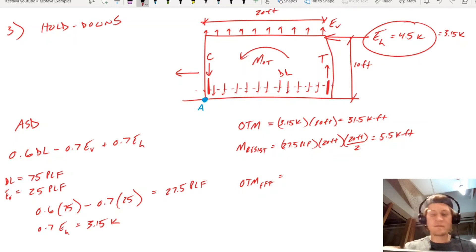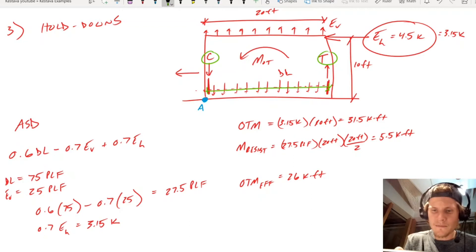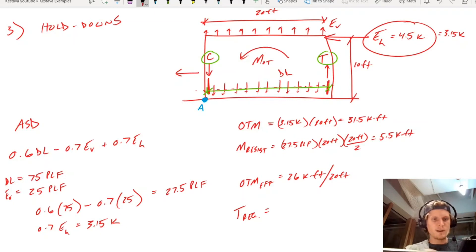So your effective overturning moment, OTM effective, is going to equal 31.5 minus 5.5, which is going to equal 26 kip-feet. We know to resolve, so we always go back to trying to find force couples. Our couple is through our compression and tension hold-downs. The couple is the distance between them. So that overturning moment is resolved in a tension-compression couple at the ends of our shear wall. And that means in order to get that tensile capacity or that tensile force, we take our overturning moment and we divide it by the length of our shear wall, 20 feet. T required, because we're still in ASD, is going to be 26 divided by 20, is going to be 1.3 kips of upward force. So that's our required tensile force acting on our hold-down.